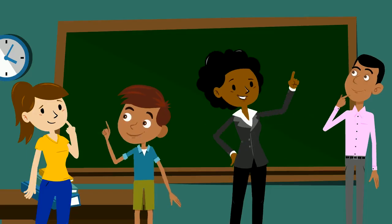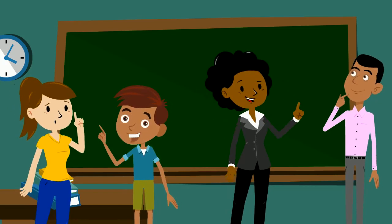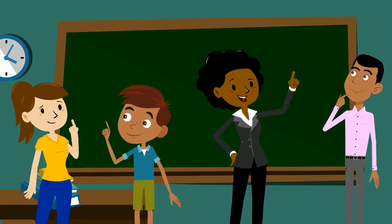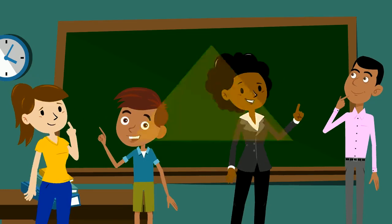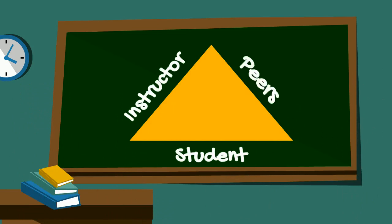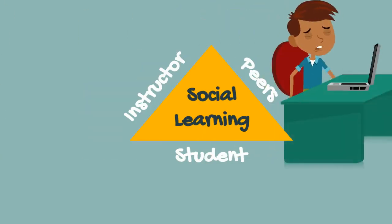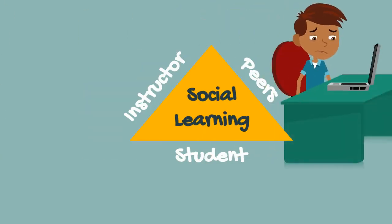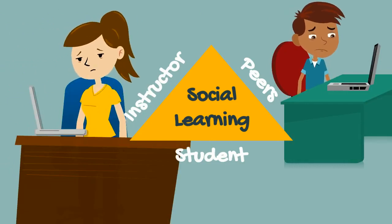University classes are, at their core, social learning experiences. As the teacher, you interact with the whole class and with individual students, but your students also interact with their peers. When you consider the class as a social learning environment, it comes as no shock that a big reason for high dropout rates in online university classes is because students don't feel a connection to anyone else.